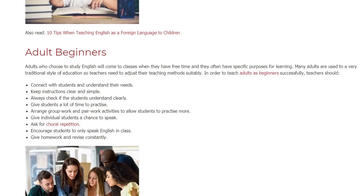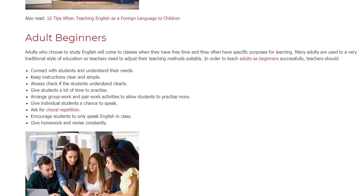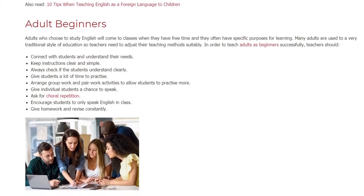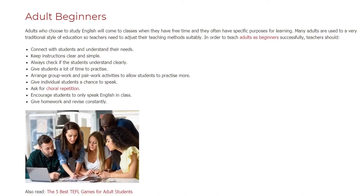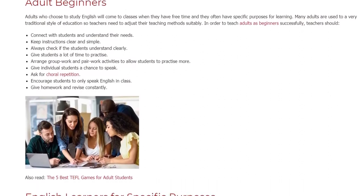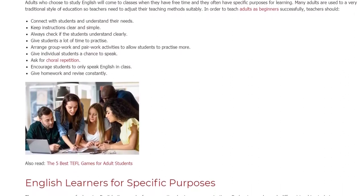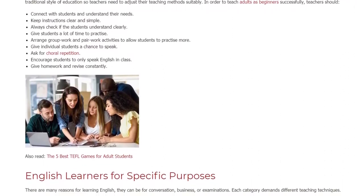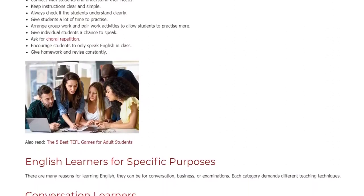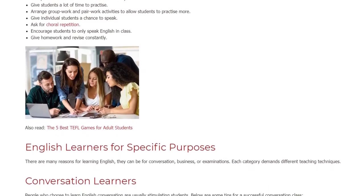In order to teach adults as beginners successfully, teachers should connect with students and understand their needs. Keep instructions clear and simple. Always check if the students understand clearly. Give students a lot of time to practice. Arrange group work and pair work activities to allow students to practice more. Give individual students a chance to speak. Ask for choral repetition.